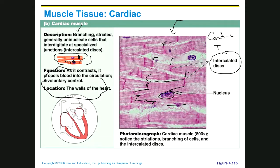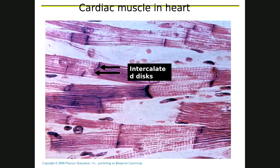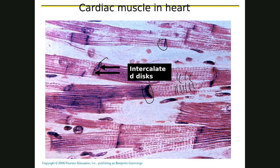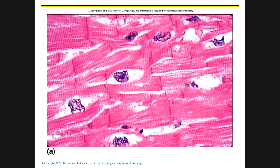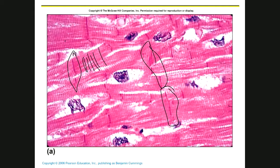Remember, cardiac muscle is involuntary. This picture shows the intercalated disc very, very well. Even though it's hard to see, you can see the stripes in here. Can everybody find the intercalated discs? Can everybody see the stripes? So it's striated tissue — the stripes are not as obvious as they were with skeletal muscle, but they're there. There's the nucleus. So, cardiac muscle.